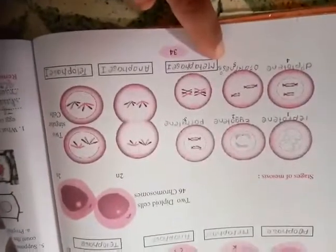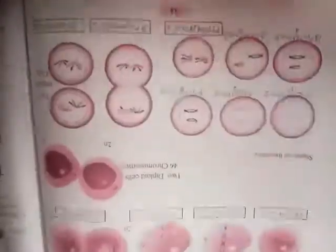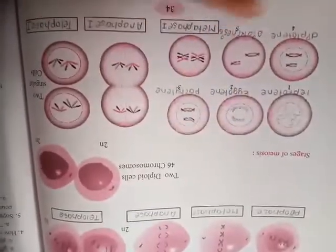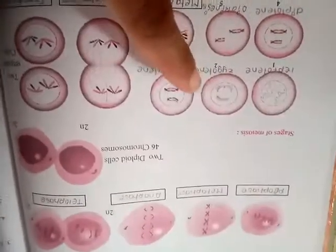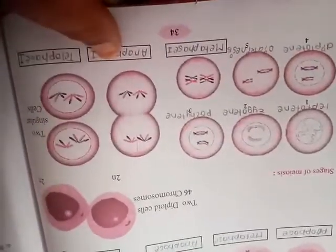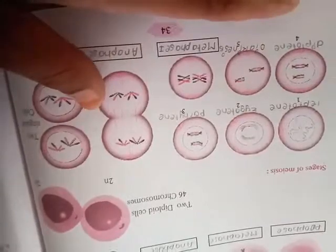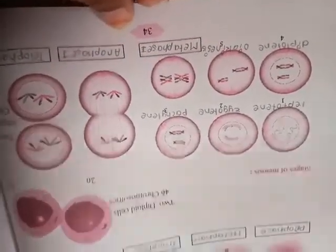Meiosis prophase 1 is lengthier as compared to the prophase of mitosis. Now why is it lengthier? Because it is complying with five steps and during these five steps, there is crossing over taking place, meaning the exchange of genetic information or there is formation of different daughter cells with different sets of chromosomes.